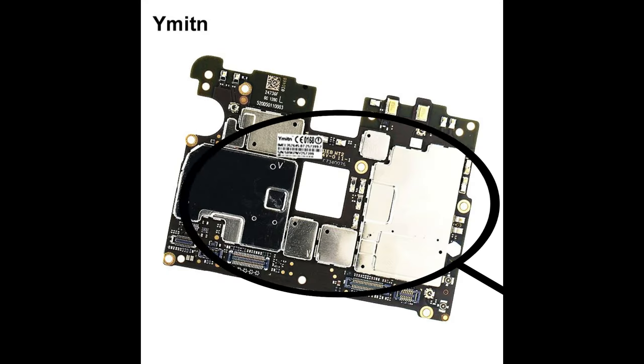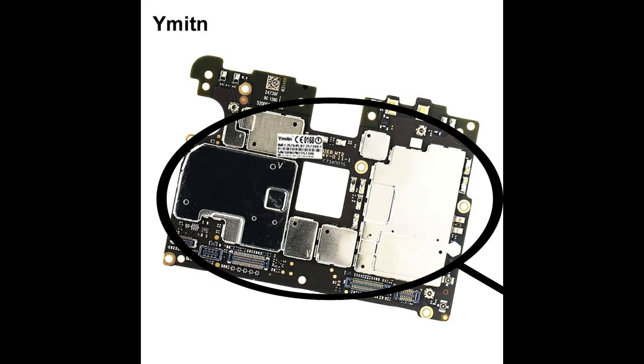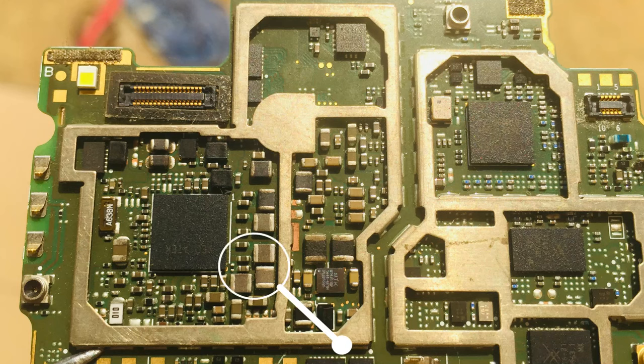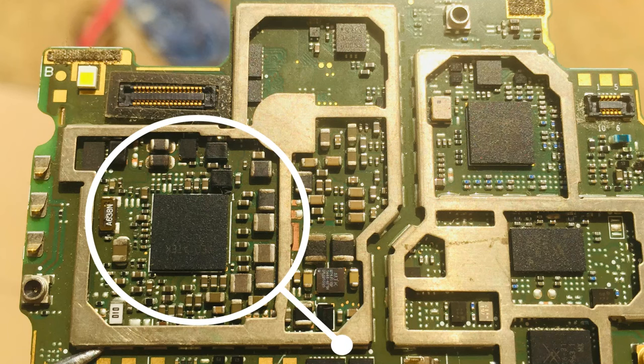How to Identify Power IC: It is mostly protected by a silver-plated metal. You will observe that the power IC normally has so many capacitors, resistors, and a good number of coils of varied shapes and sizes, which helps in proper and accurate distribution of current needed for healthy functioning.